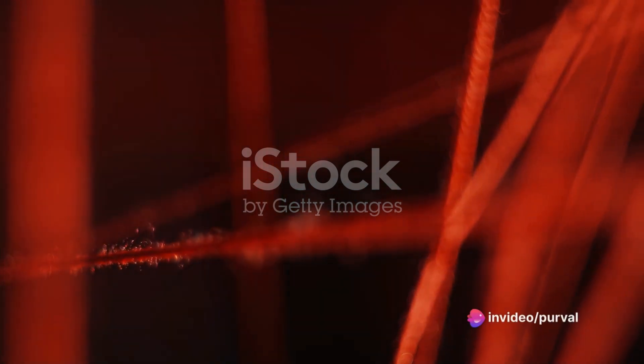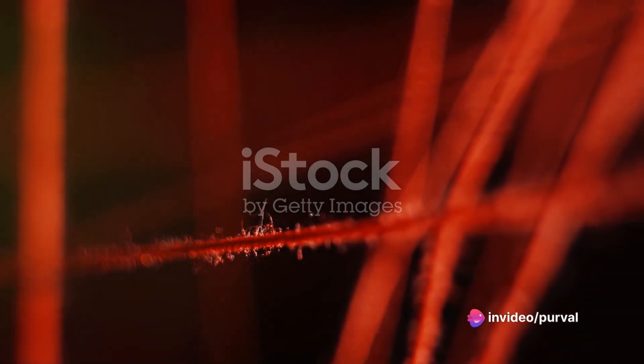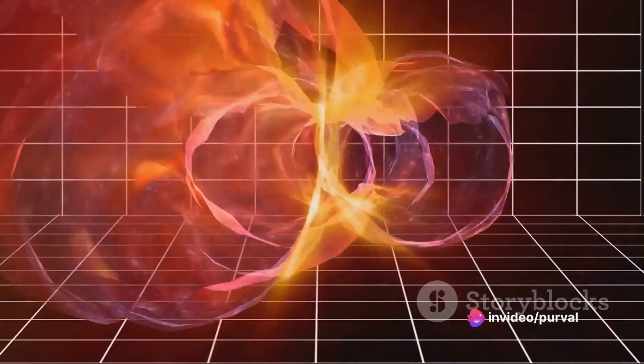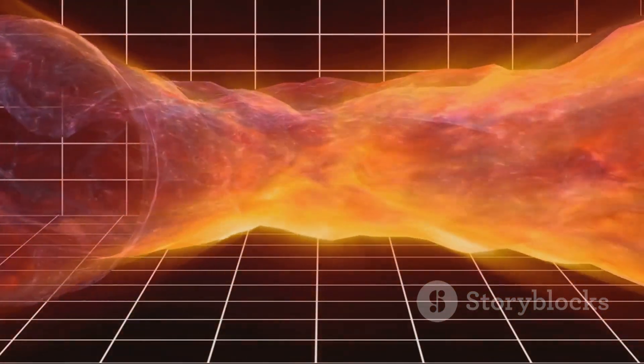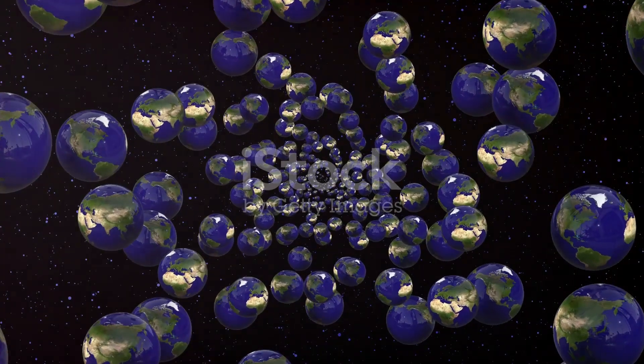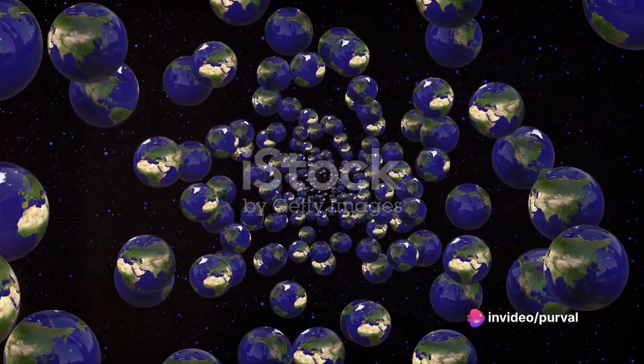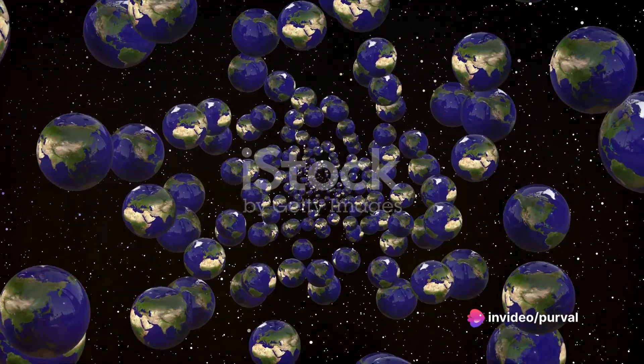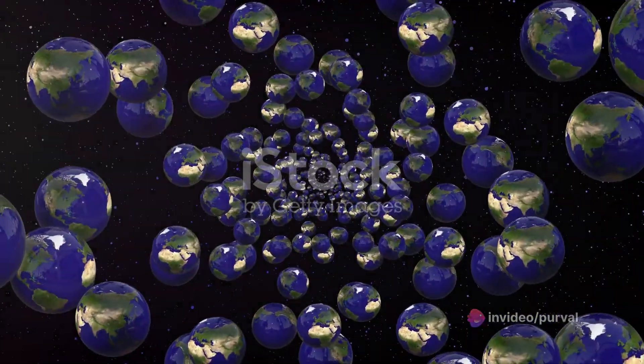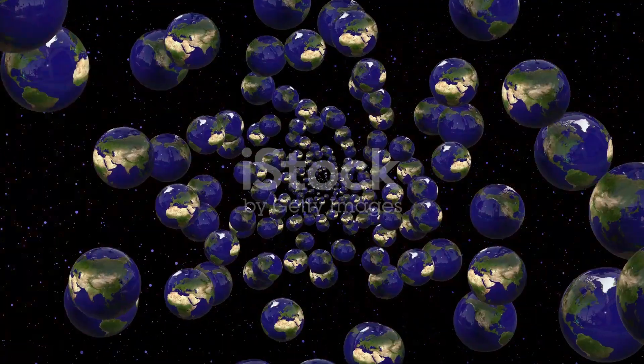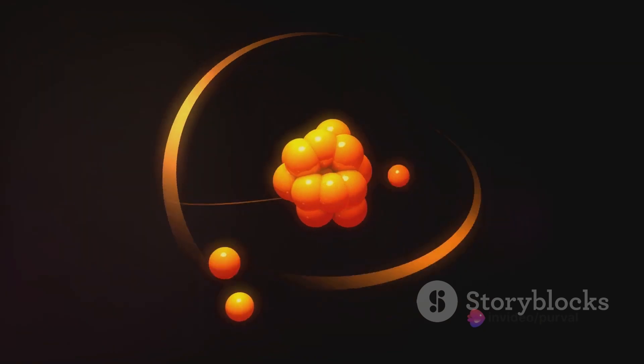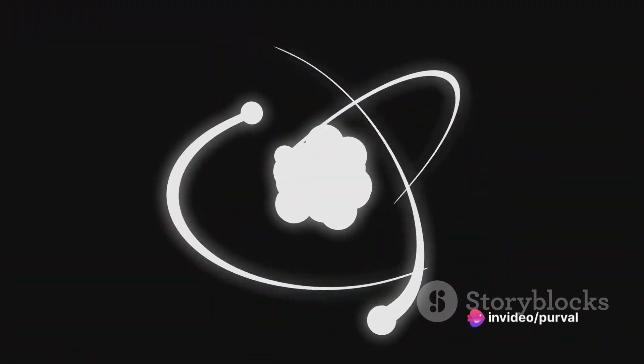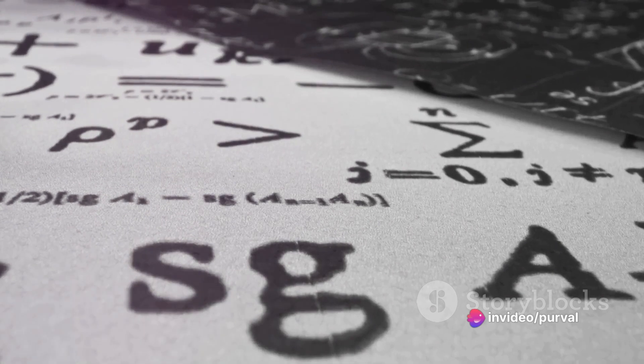Enter the multiverse theory combined with eternal inflation and string theory. If we accept that there are multiple universes or bubbles, each with their own set of physical constants, then suddenly the fine-tuning problem becomes less perplexing. Imagine rolling a dice an infinite number of times. Eventually, you're bound to roll a six. It's just a matter of time and probability. Similarly, if there are an infinite number of universes, each with slightly different physical constants, it becomes inevitable that at least some of these universes will have the right conditions for life to evolve.